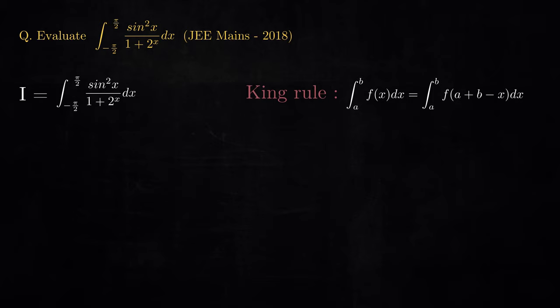Let us look at an example problem. We are asked to evaluate the integral of this messy function over the limits minus pi by 2 to pi by 2. Let us say that I is the value that this integral evaluates to. Using the king rule that we have just discussed, we can represent the same integral as the following.